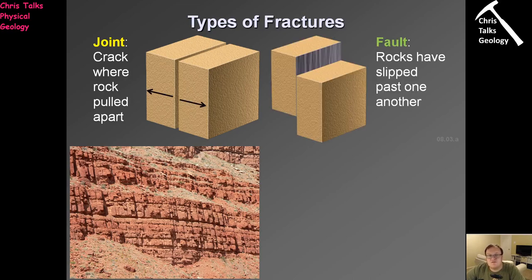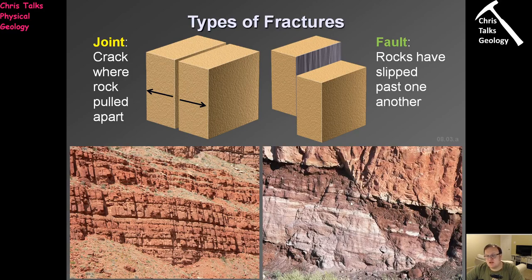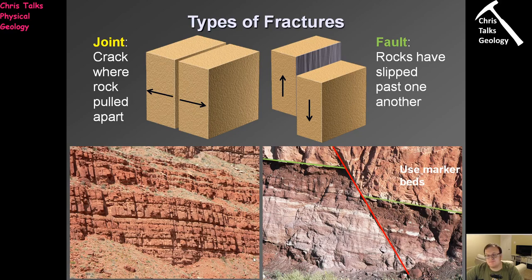In the case of a fault, the two pieces of rock either side of the fracture will move relative to each other — they slip past each other. That produces what we call offset. There's the fault plane itself. We use marker beds to show which way the faults have moved. Here's a marker bed with an orange bed above and a rusty red bed below. I can see this side of the fault has dropped down relative to the other side, so I can see which side has slipped and in which direction the rocks have been displaced.